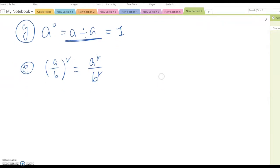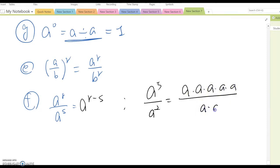Then, property F, A to the R over A to the S, which is A to the R minus S. Example, maybe A fifth over A squared, then become one, two, three, four, five A's over one, two A's. As you see, the common A cancelled out. Three left here. Then, what is the shortcut? You subtract this from five. So, in this case, A to the five minus two becomes A to the third power.